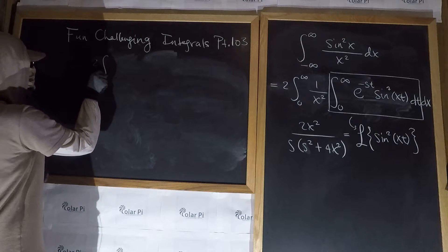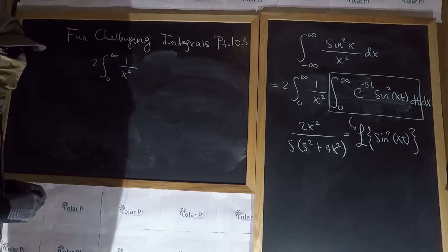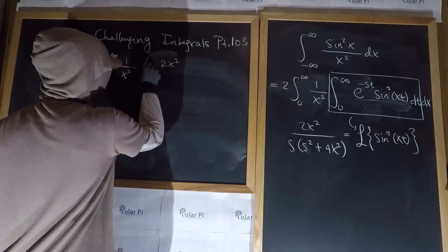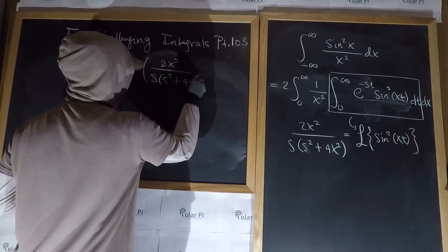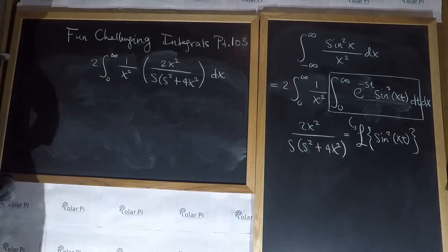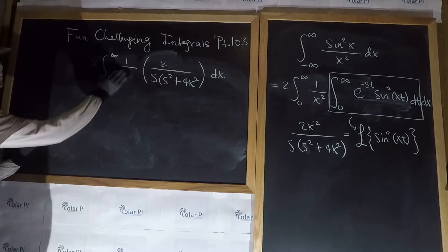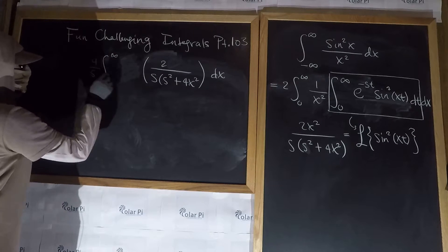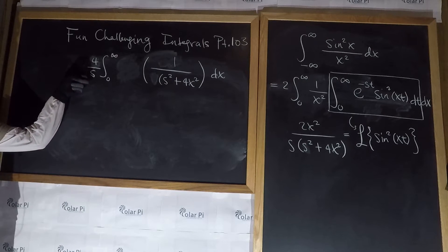So we have 2 times integral from 0 to infinity of 1 over x squared, and then in place of what's boxed, 2x squared over s times s squared plus 4x squared, and then just dx. And why was I able to take out the 1 over s that was right here? Well, because integrating with respect to x, s is a constant.